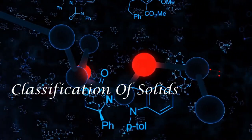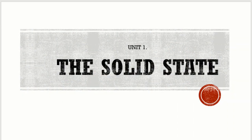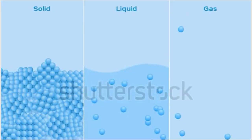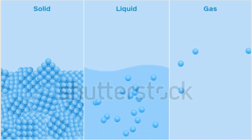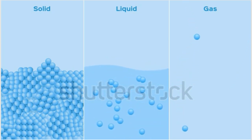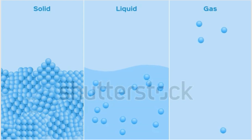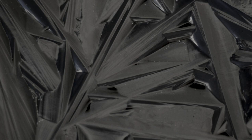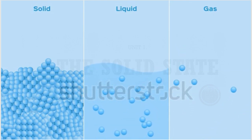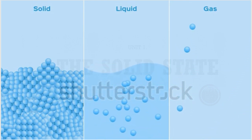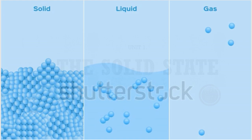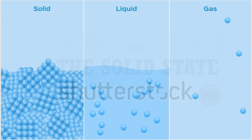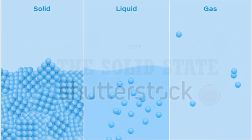We have already learned that matter exists in the three main states — solids, liquids, and gases. Solids differ from liquids and gases due to the fact that liquids and gases possess fluidity whereas solids possess rigidity. This is because the constituent particles in liquids and gases are free to move, whereas in solids the position of the constituent particles are fixed and they can only oscillate about their mean positions.